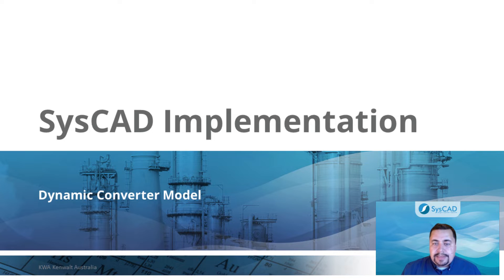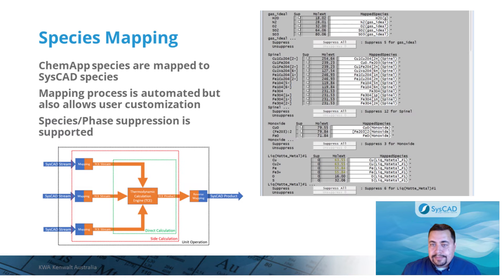Once the thermodynamic system is defined and the ChemSage input file is created and validated, it is possible to start building the SysCAD model. A critical first step necessary when using TCEs in SysCAD is to create a proper mapping between the native SysCAD compound database and the list of compounds and end members defined in the ChemSage file.